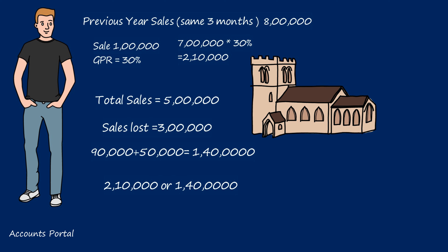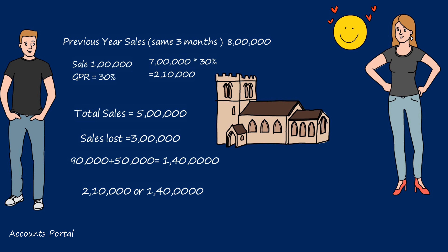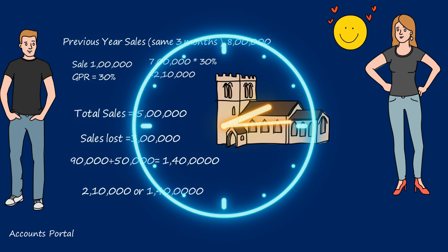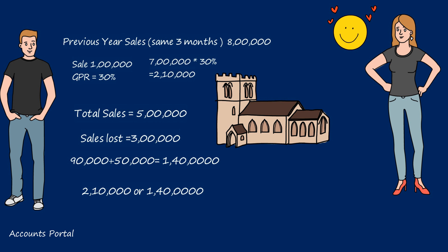Now you decide — do you want to give me two lakh ten thousand, or one lakh forty thousand? The insurance company is now convinced. As a result, the insurance company agrees to compensate certain expenses which have never been incurred in the past and are not insured, because the insurance company is getting a benefit.